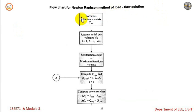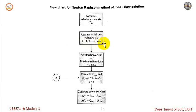Then we need to assume the initial bus voltages V_i, where i is equal to 1 up to n, but i should not be equal to the slack bus. We then set the iteration count r equal to 0, and the maximum number of iterations equal to r_max.